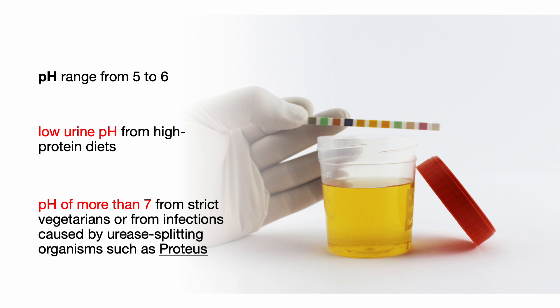Urine pH ranges from 5 to 6. A low urine pH occurs in patients eating high-protein diets. A pH of more than 7 is alkaline urine and can occur in patients who are strict vegetarians or patients with infections caused by urease-splitting organisms such as Proteus.